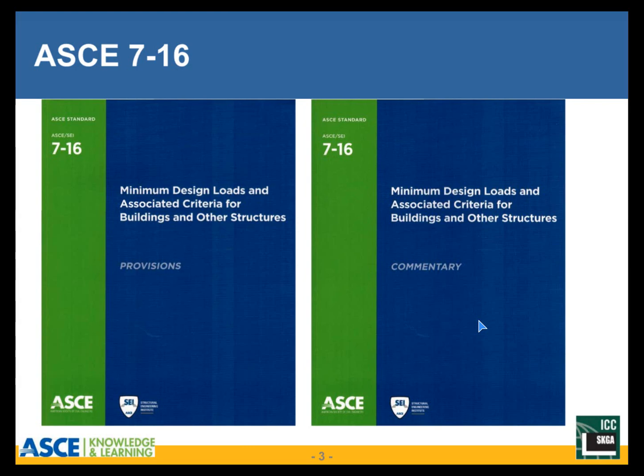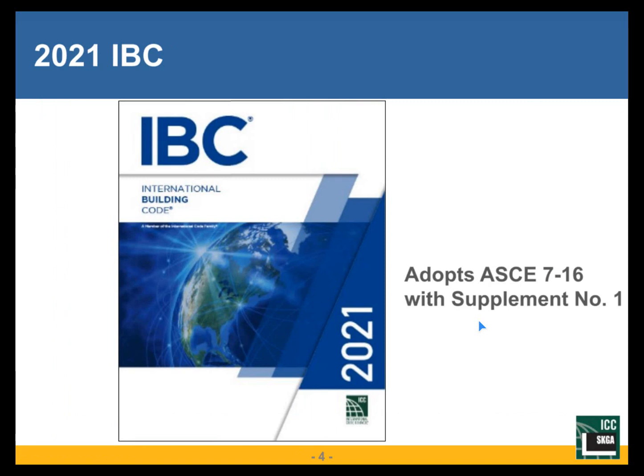ASCE 7-16 is a two-volume set, with the commentary separate. ASCE 7-22 is now out — it looks very similar, but that is not something we will talk about today. That will be adopted by the 2024 IBC.